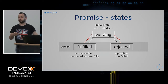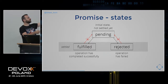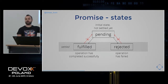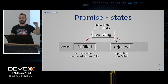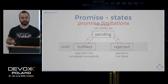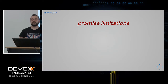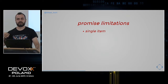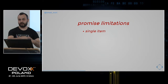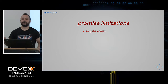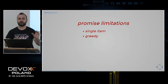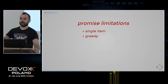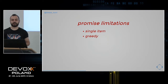Once a promise settles, it cannot change — fulfilled triggers positive then-callbacks, rejected finds the first catch. Limitations: a promise is a single item, so for anything repetitive you'd have to recreate promises, making streams a better fit. Promises are greedy — when created the operation is already running and cannot be cancelled. Reactive streams are cancelable: if you unsubscribe, new items won't reach you. In contrast a resolved promise will always execute its then-callback with no rollback mechanism.